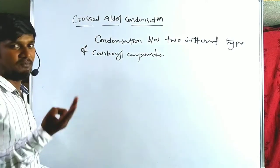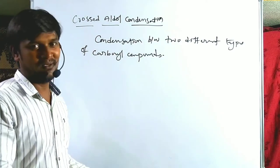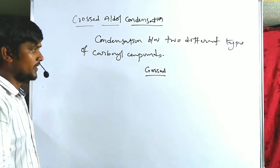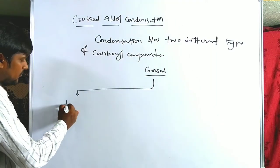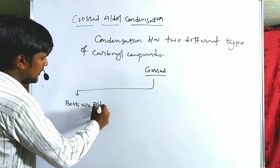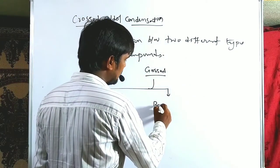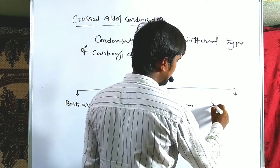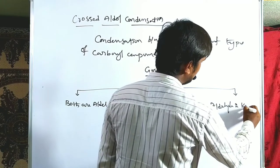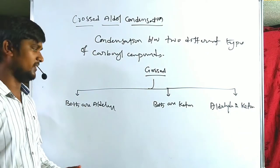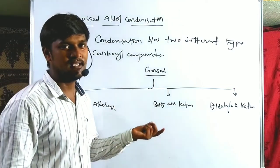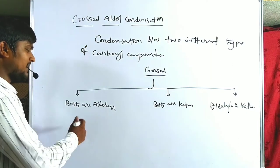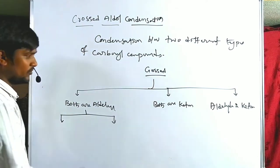The two types of carbonyl compounds will give different types of probabilities. In crossed aldol condensation, the possible cases are: both are aldehydes, both are ketones, or one aldehyde and another one is ketone. We have three types of possibilities. Now for both aldehydes and both ketones, we further classify into two types based on alpha hydrogen presence.